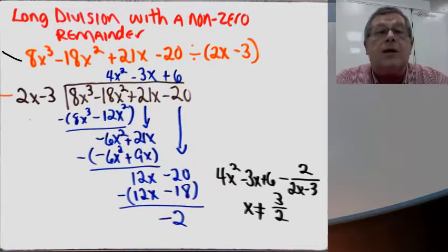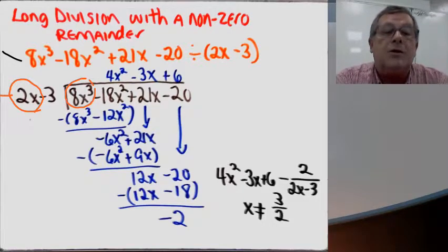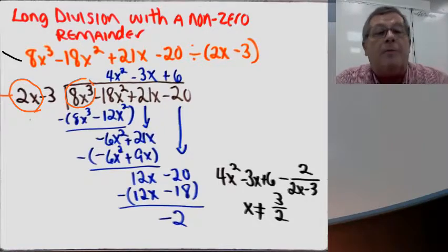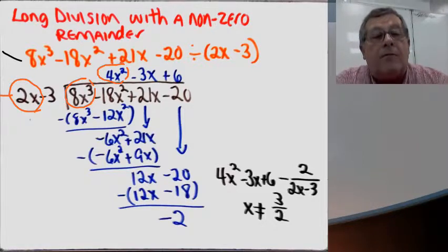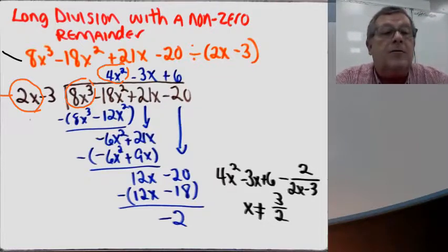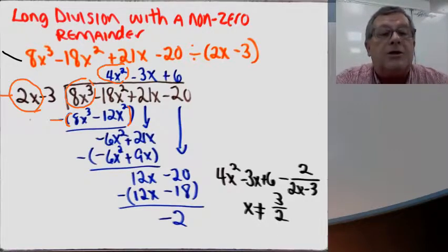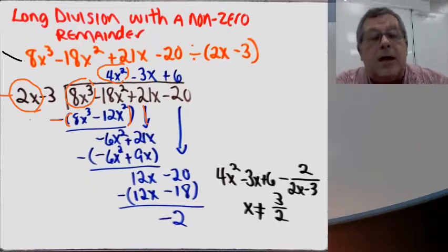Just as before, I'm focusing on the lead terms. How many times will 2x go into 8x cubed? Well, 2x will go into 8x cubed 4x squared times. I put my 4x squared over top of the 18x squared term in the dividend. Now I multiply 4x squared times 2x minus 3: that gives me 8x cubed minus 12x squared. I put that in parentheses with a minus sign, change my signs, and 8x cubed minus 8x cubed is 0. Minus 18x squared plus 12x squared gives me minus 6x squared.